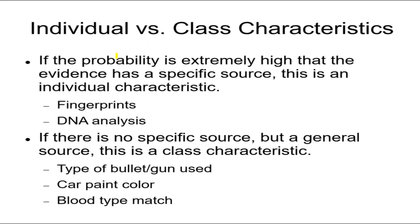This tells us the difference between what we call an individual versus a class characteristic. Individual characteristics are something that you can actually say comes from pretty much one thing and one thing only. That means there's a high probability that it has the same source. Fingerprints. Probably one of the most obvious ones. If the fingerprint at the crime scene matches the fingerprints of the suspect, it is an extremely high probability that the suspect was there and put his fingerprints there.